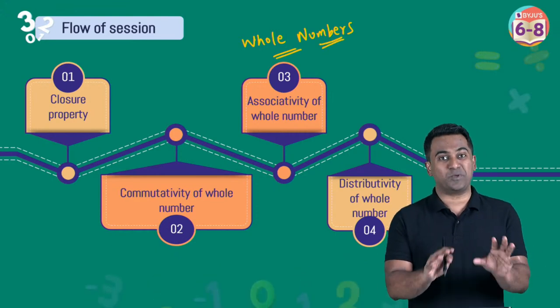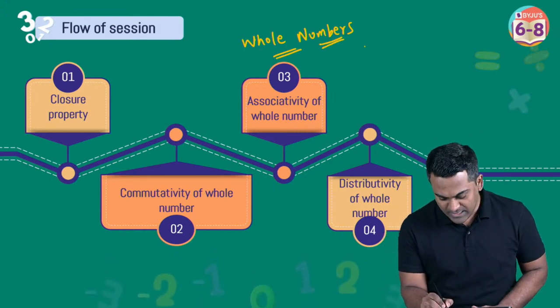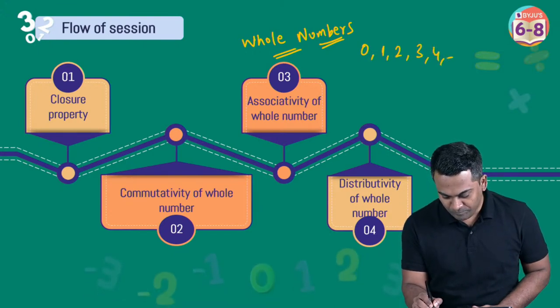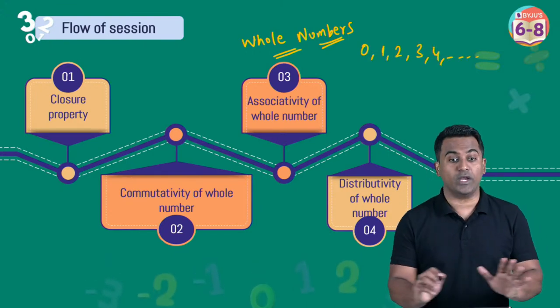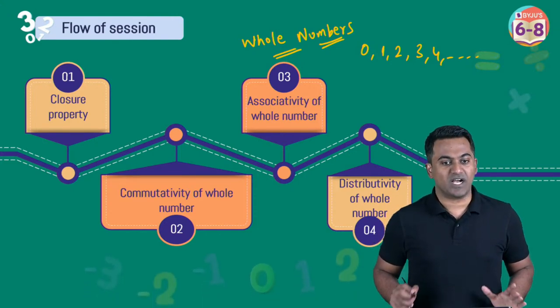Remember, all of these properties will be studied keeping whole numbers in mind. Whole numbers are numbers that start with zero — zero, one, two, three, four — and they go on and on.